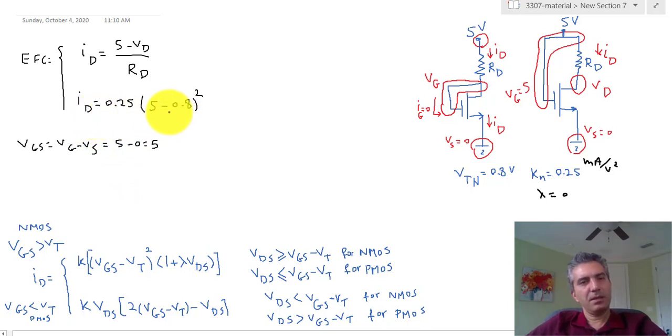So again from this I can calculate ID and then assuming that RD is given I can calculate VD. Once that's done then I actually have to go back and make sure VDS was greater than VGS minus VT.